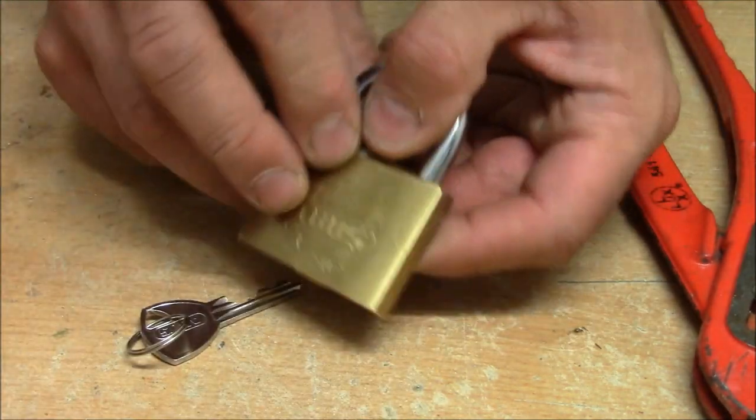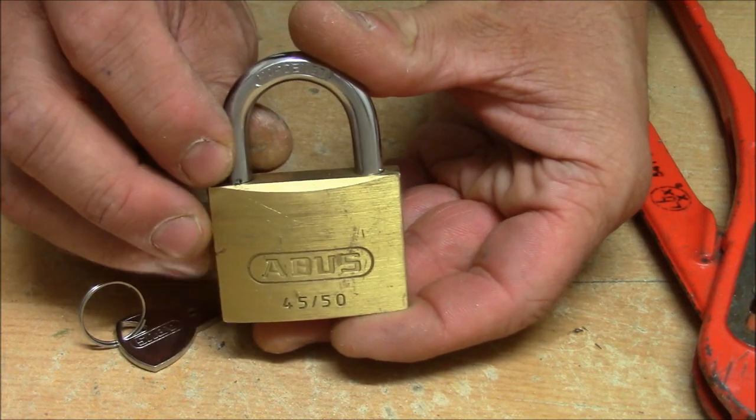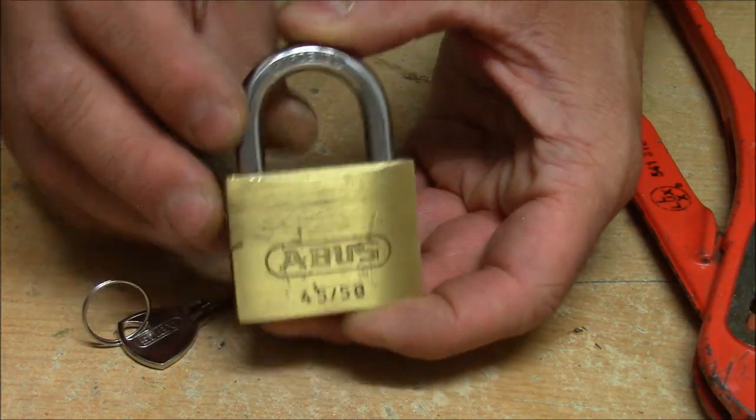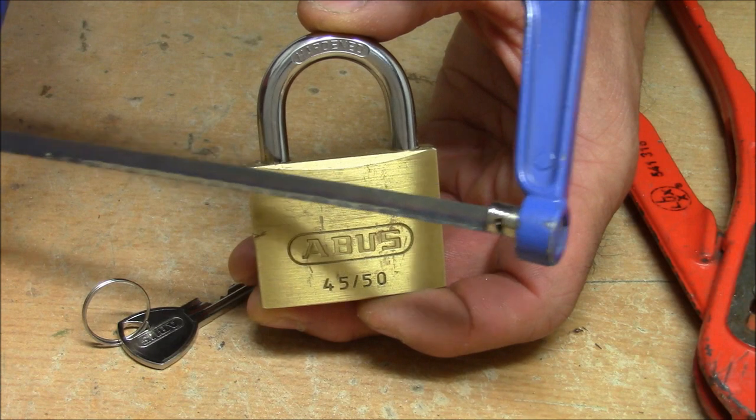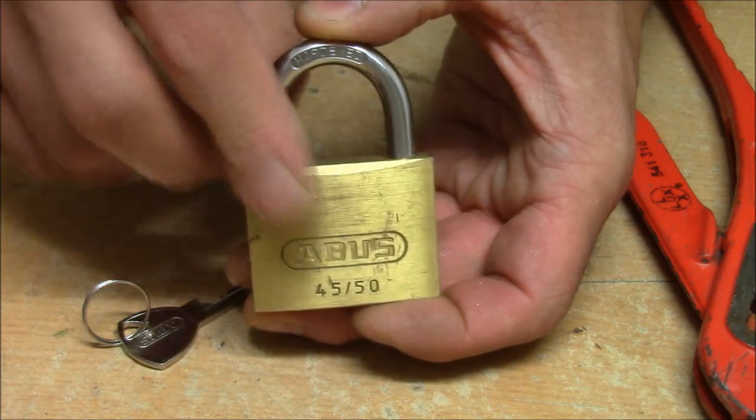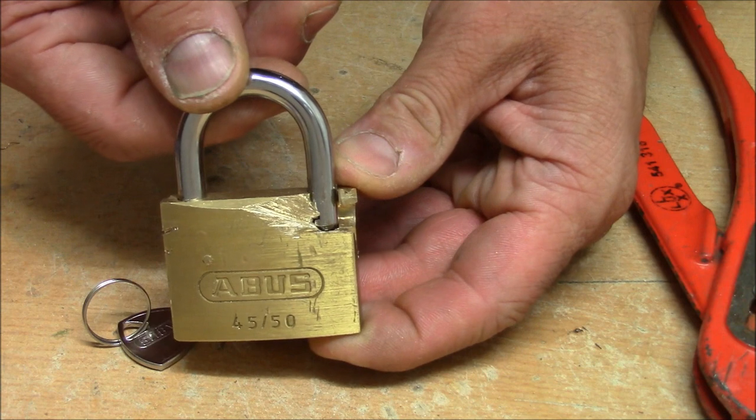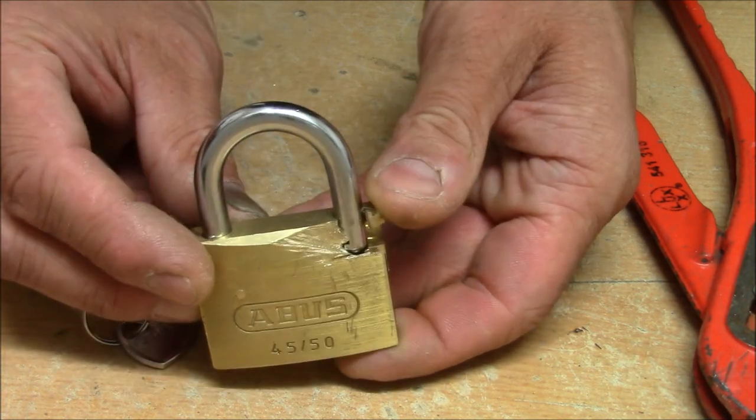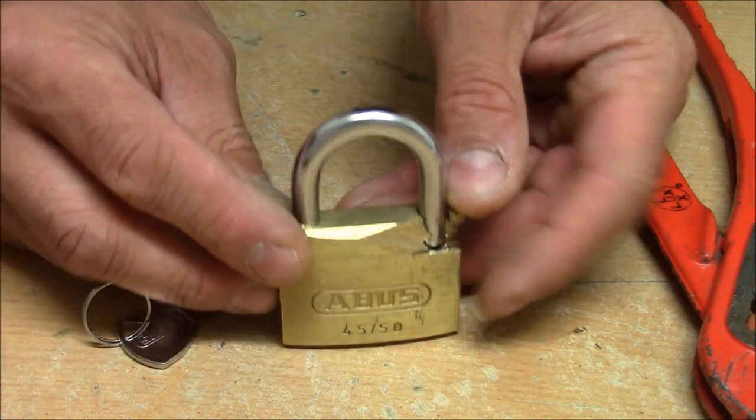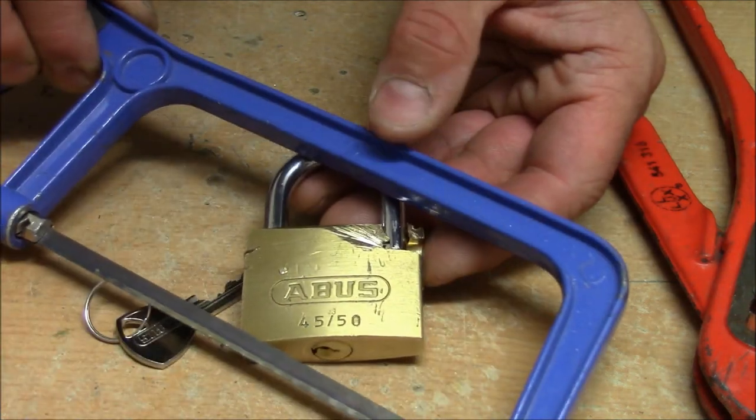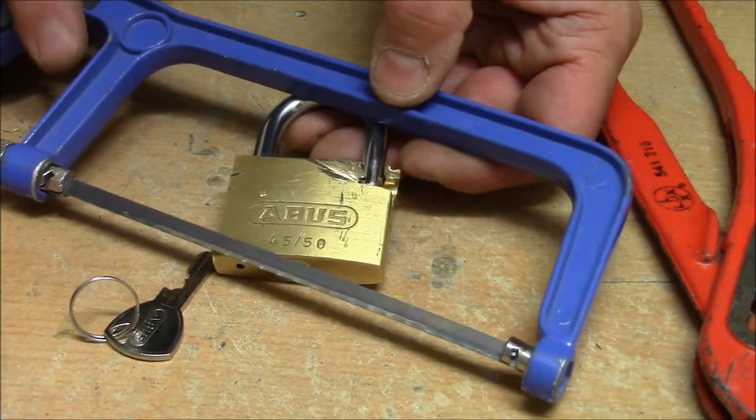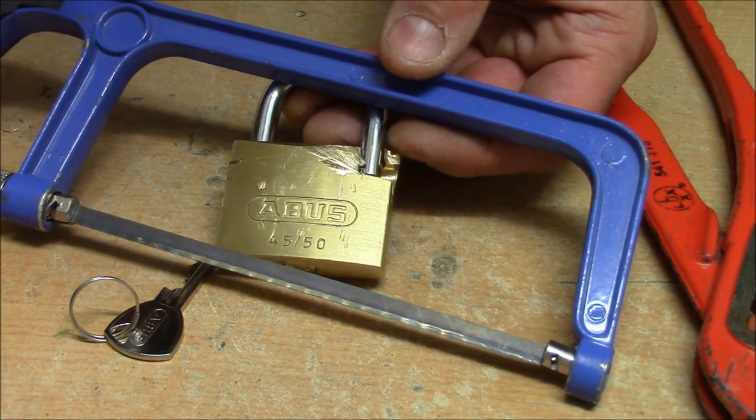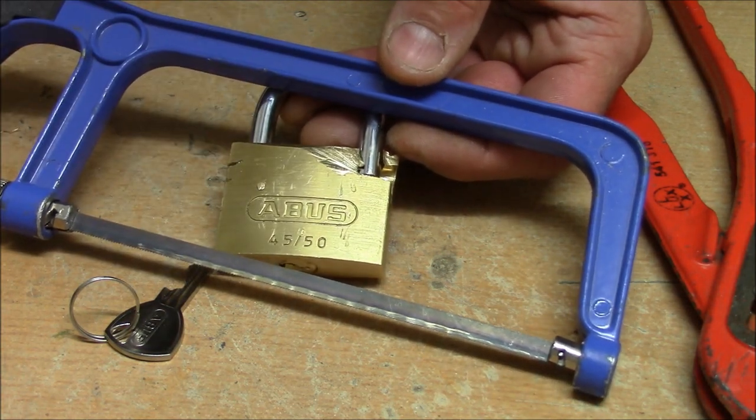I think that proves the point that when you have a really good hardened steel shackle where you cannot cut through with one of these saws, these padlocks are still vulnerable because of the soft brass body where you can easily cut open a window and twist out the shackle. I hope this gives an appropriate answer to the question. If it's possible to cut through, at least for this Abus, no, it's not possible.